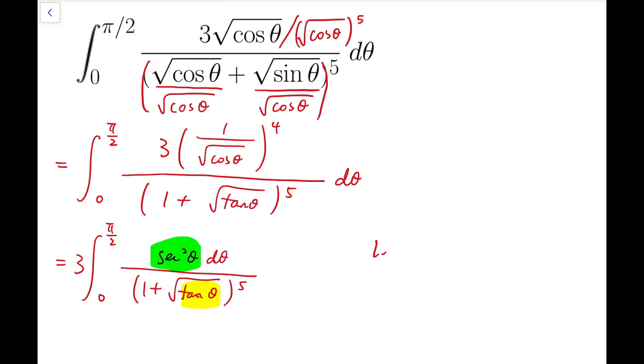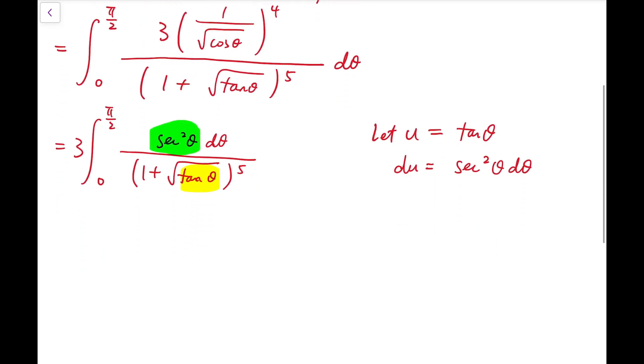Now, to do this, I'm going to let u equal tan θ, so that the new differential du will be exactly sec²θ dθ. So now, the integral becomes much easier. In particular, when θ is 0, u is 0, because tan 0 is exactly 0, while as θ tends to π/2, u tends to infinity.